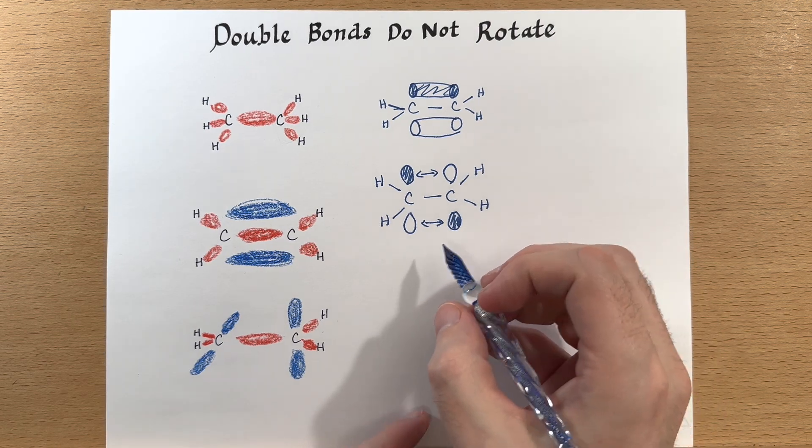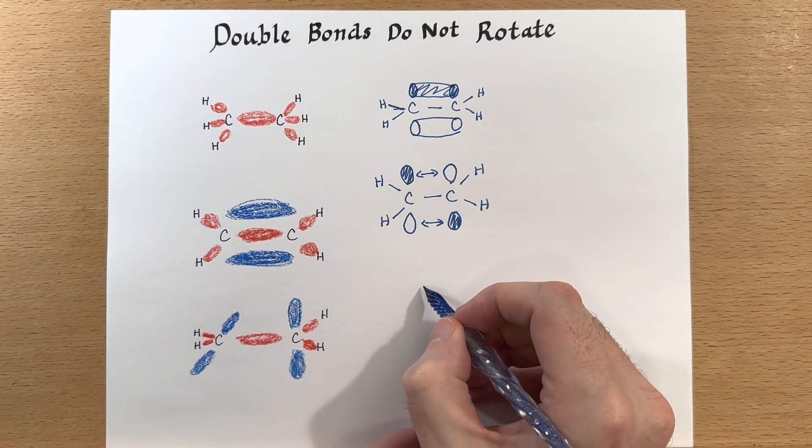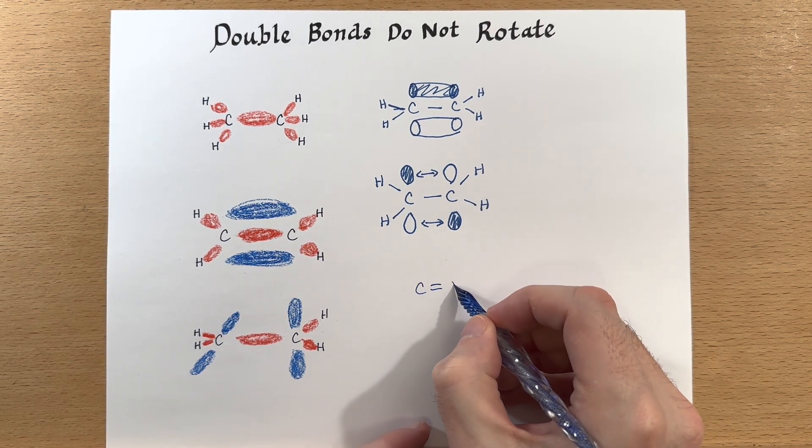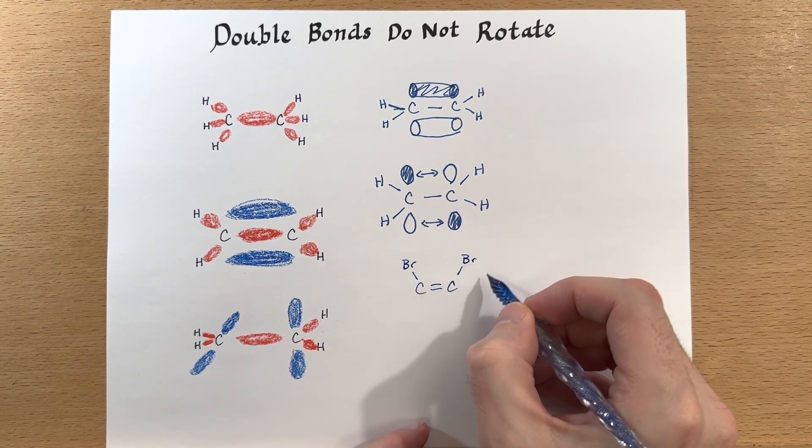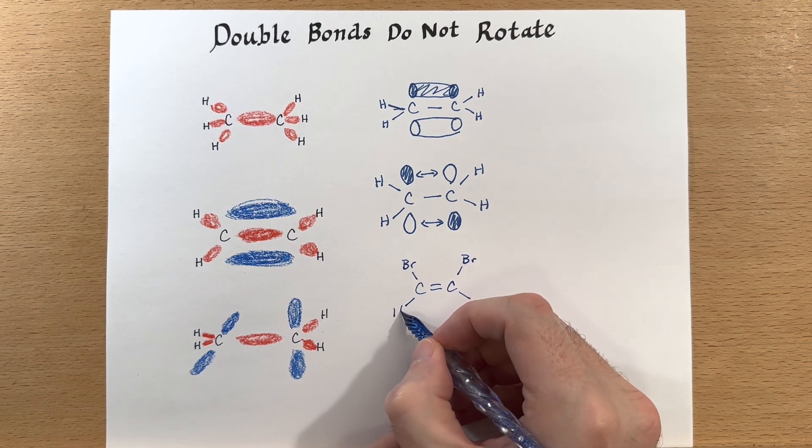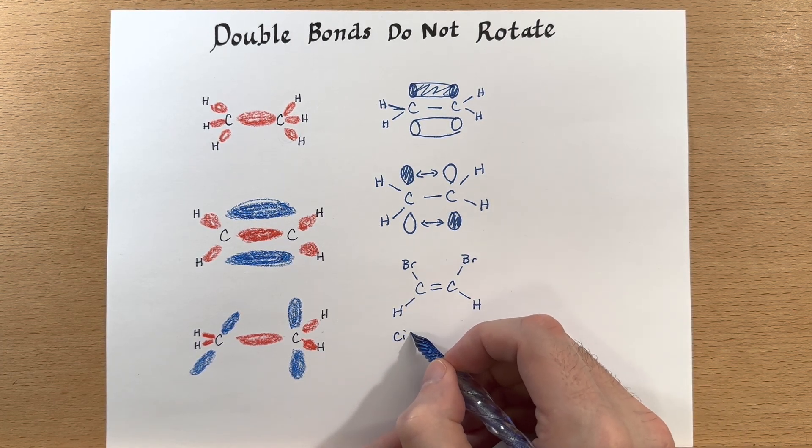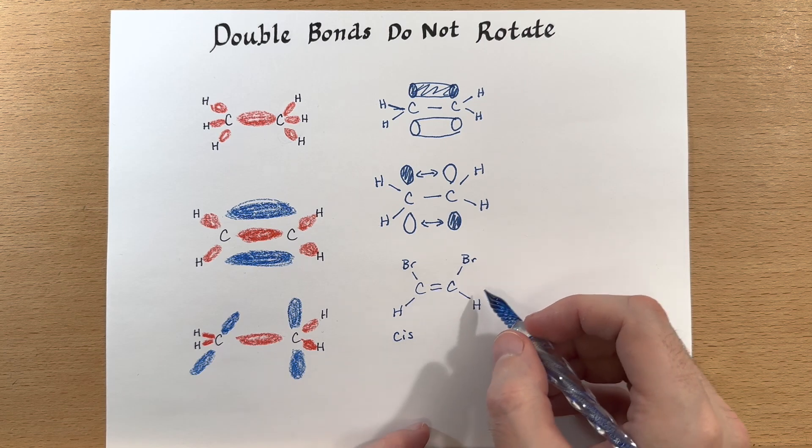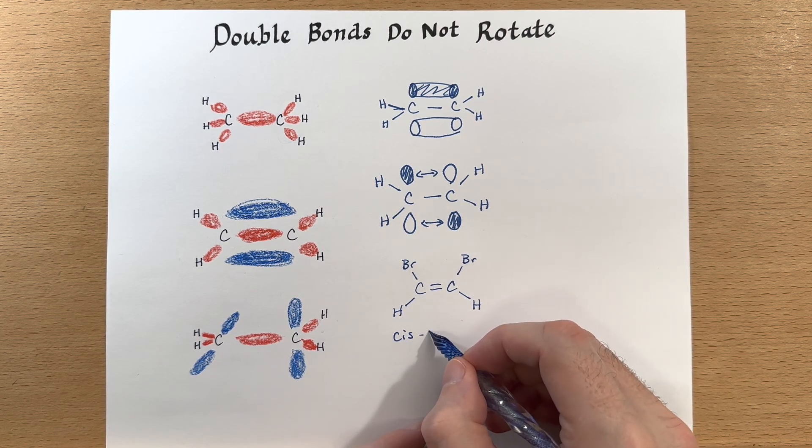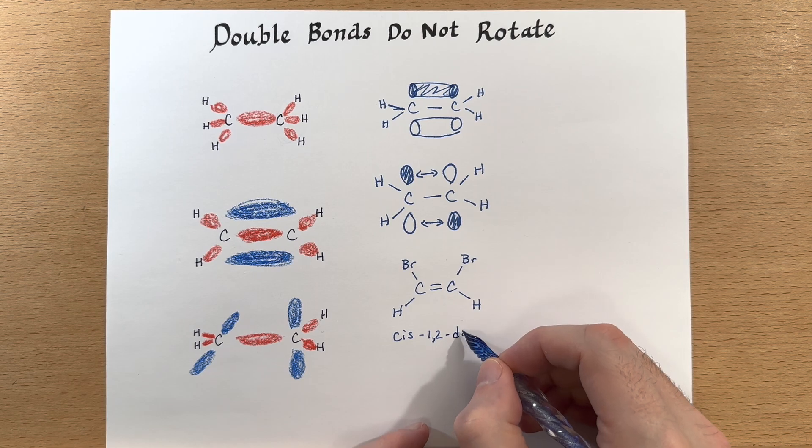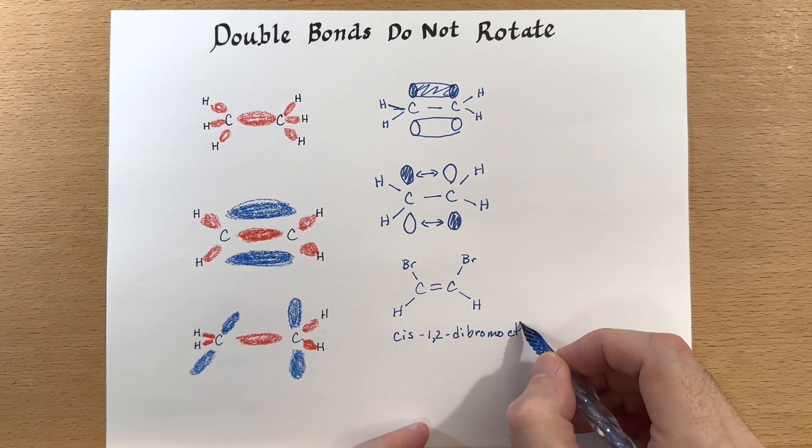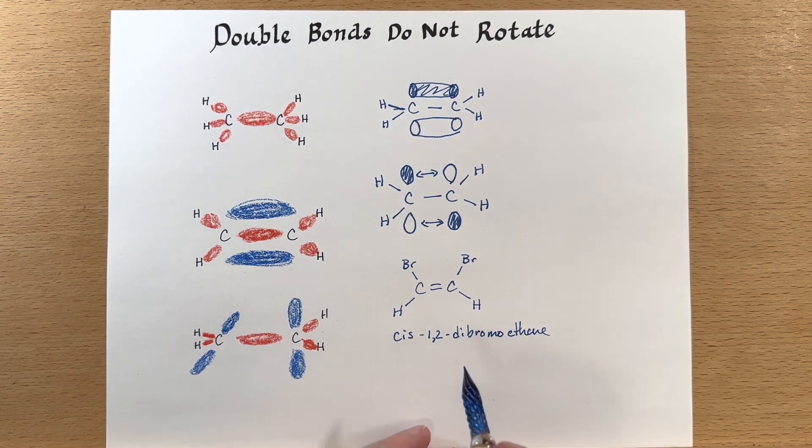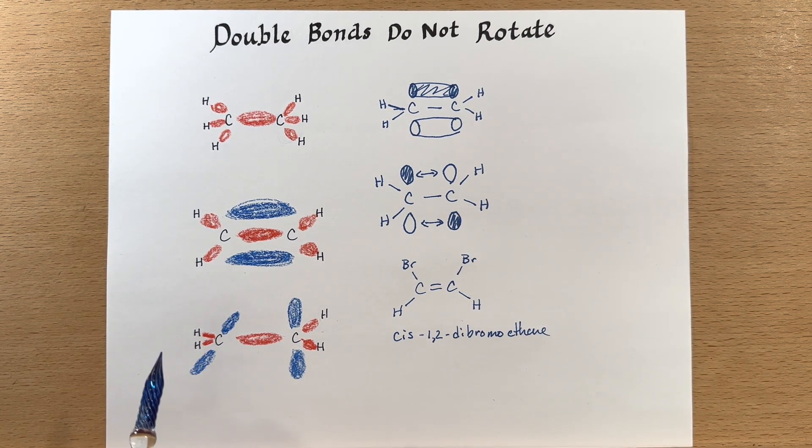And we can also just kind of draw these out. And this one is the cis configuration of 1,2-dibromoethene.